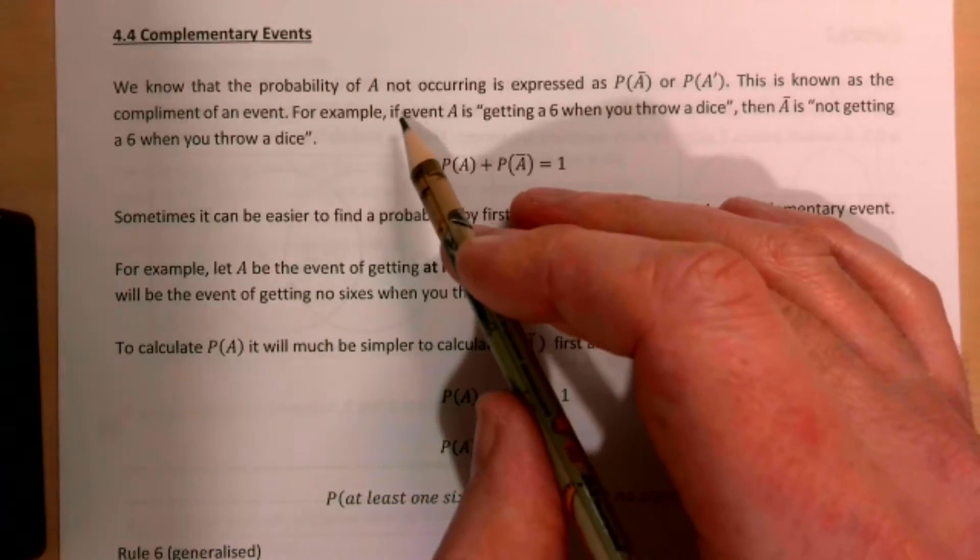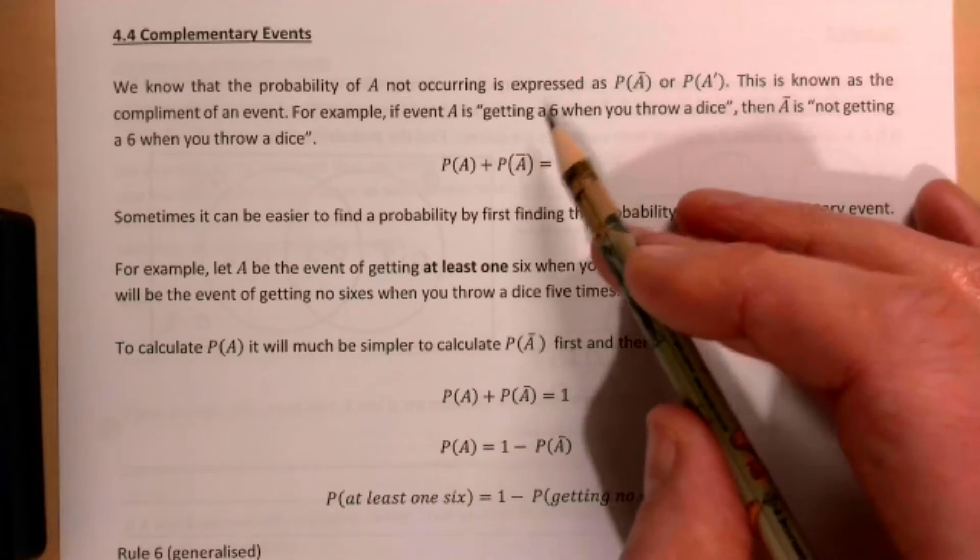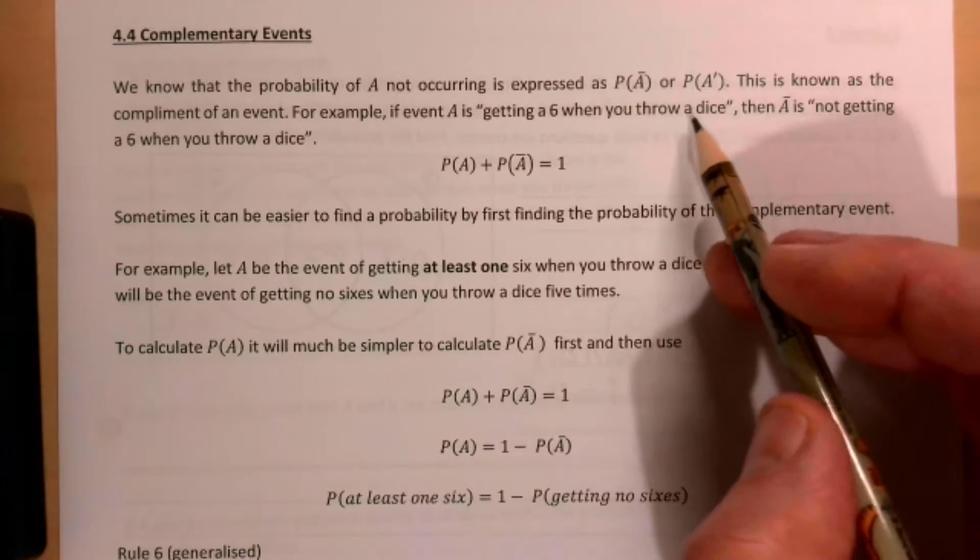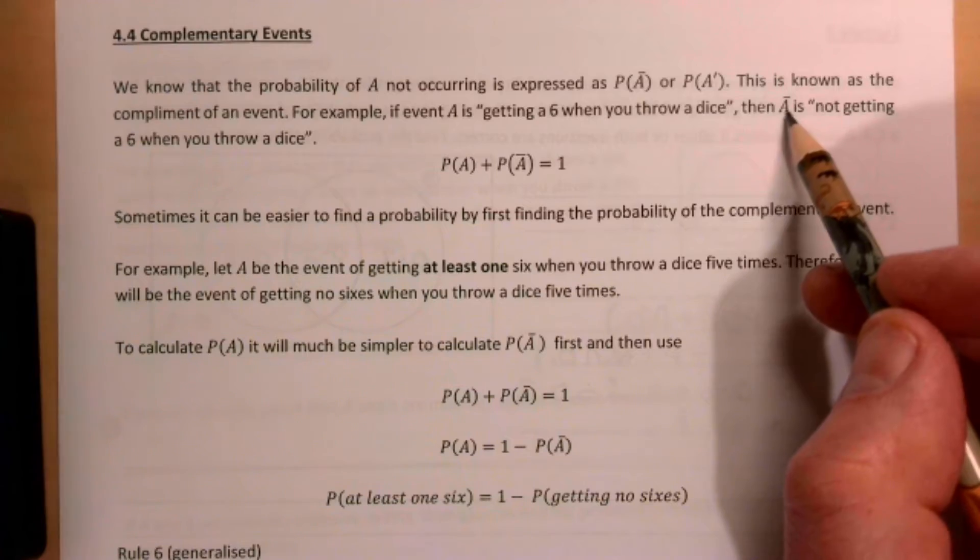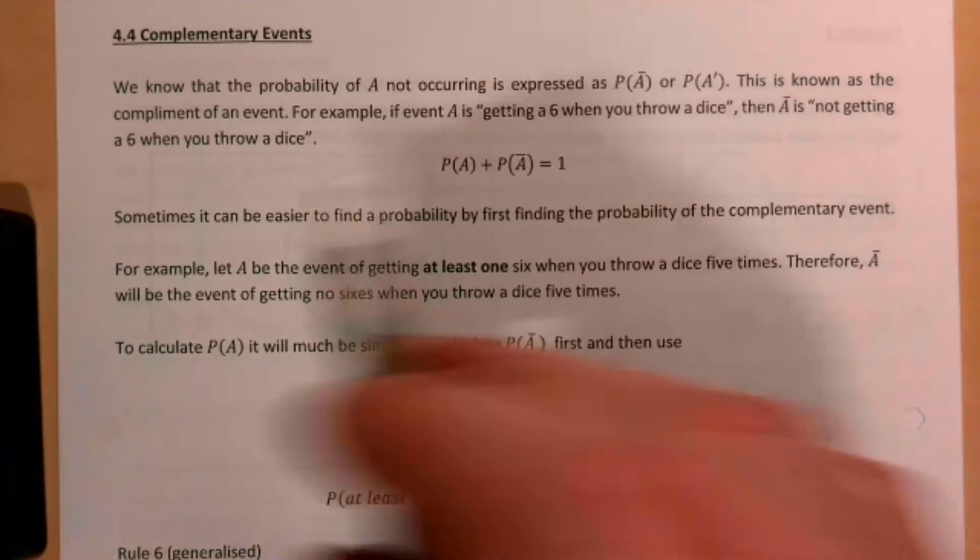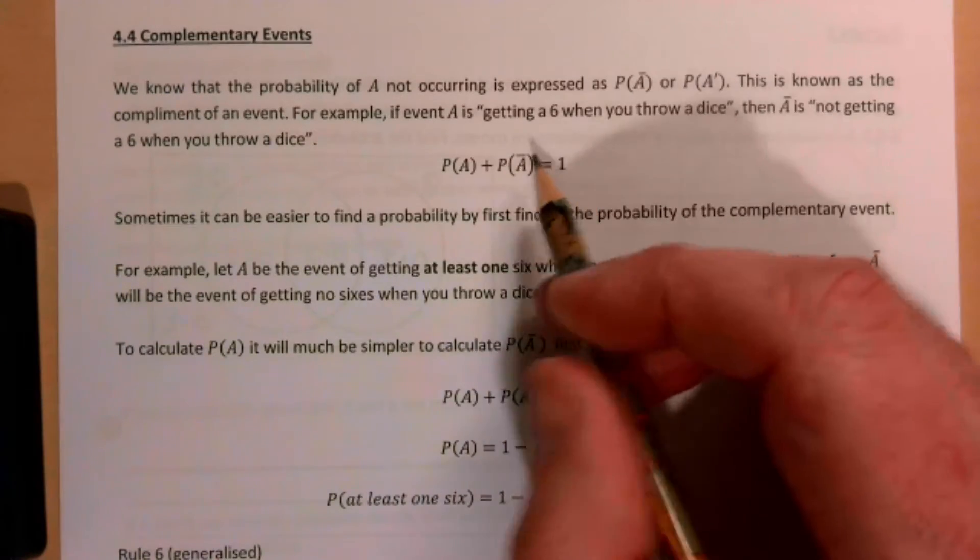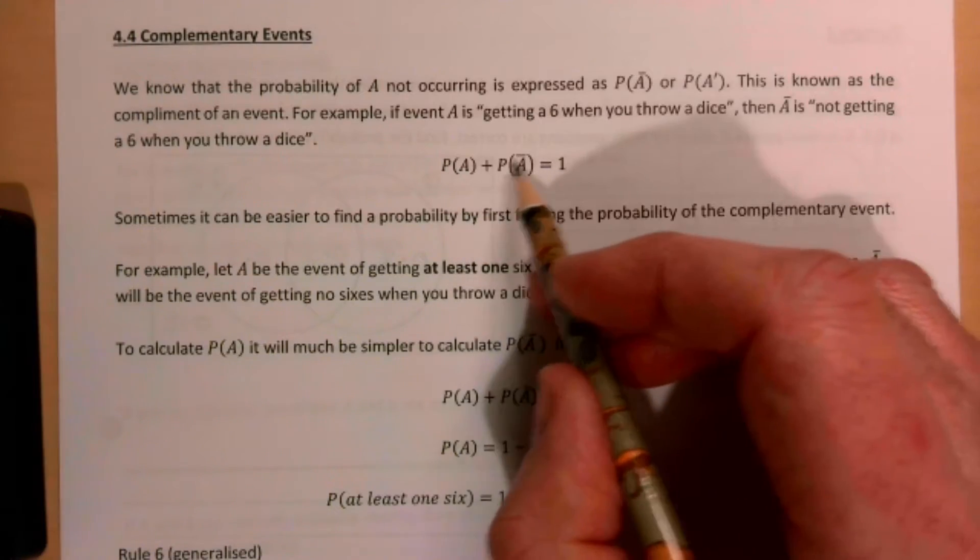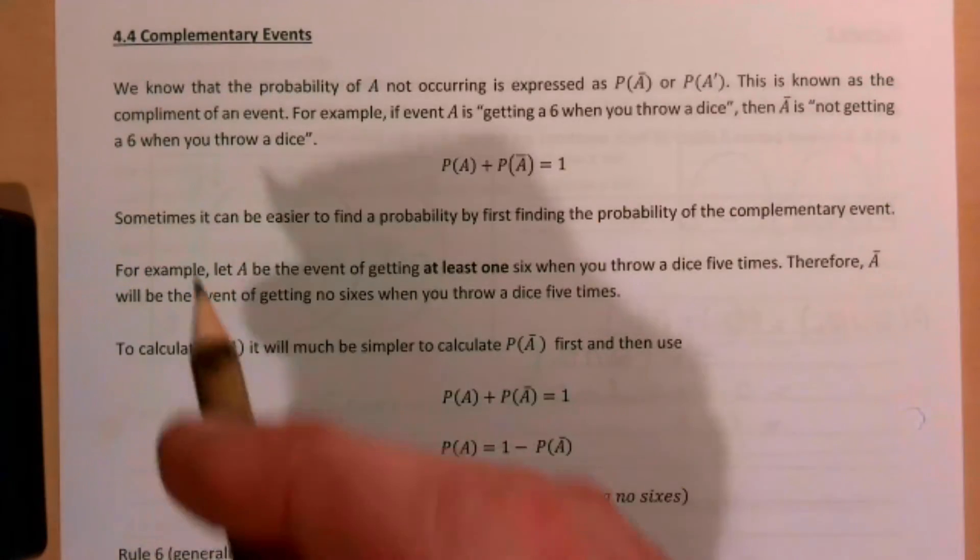For example, if event A is getting a 6 when you throw a dice, then A prime is not getting a 6 when you throw a dice. And obviously the probability of A plus the probability of not A equals 1. We've known that for a long time.